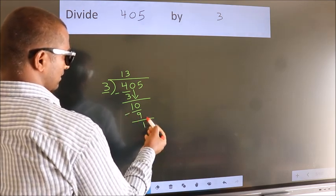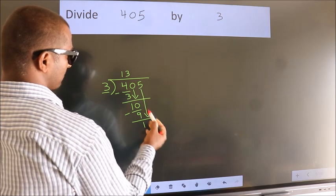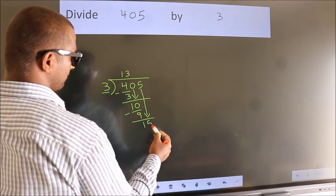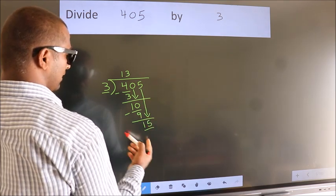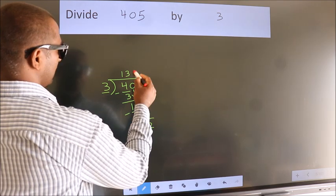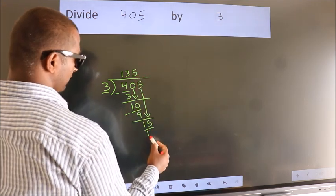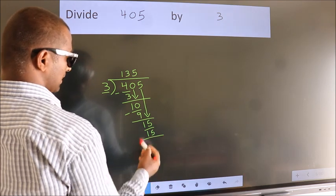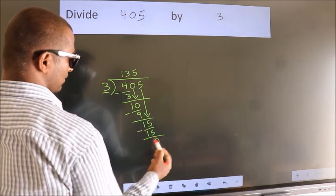After this, bring down the beside number. So, 5 down. So, 15. When do we get 15? In 3 table, 3 5s 15. Now, we subtract. We get 0.